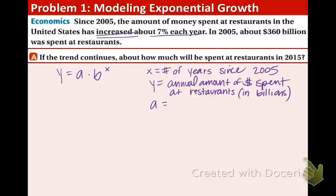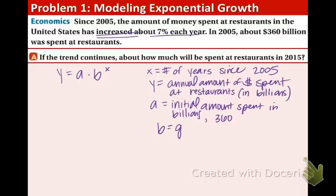A is going to be the initial amount spent in billions, which is 360. And b is going to be the growth factor. The way that you get the growth factor is you always take one, the growth factor must be bigger than one, and you add 7% in decimal form. If you start at 7%, you move the decimal over twice and you get 0.07. So when you add that together, you get 1.07.